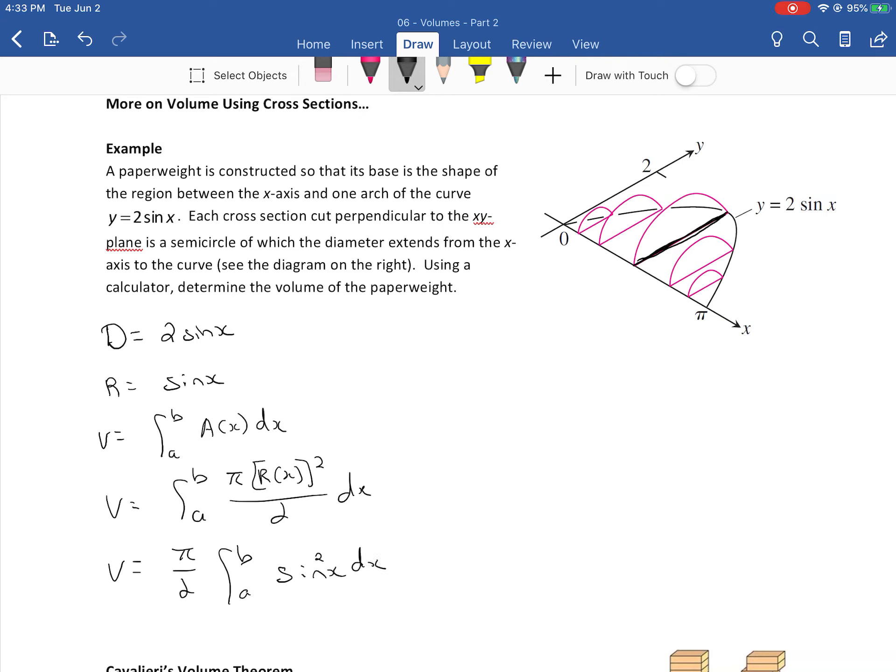Now you can do this using a trig identity, you'd have to use cos 2x equals 1 minus 2 sine squared x, isolate sine squared x and put that in. It's not that bad of an integral really compared to what we've been doing but this particular one asks us to use the calculator so let me just walk through the steps there.